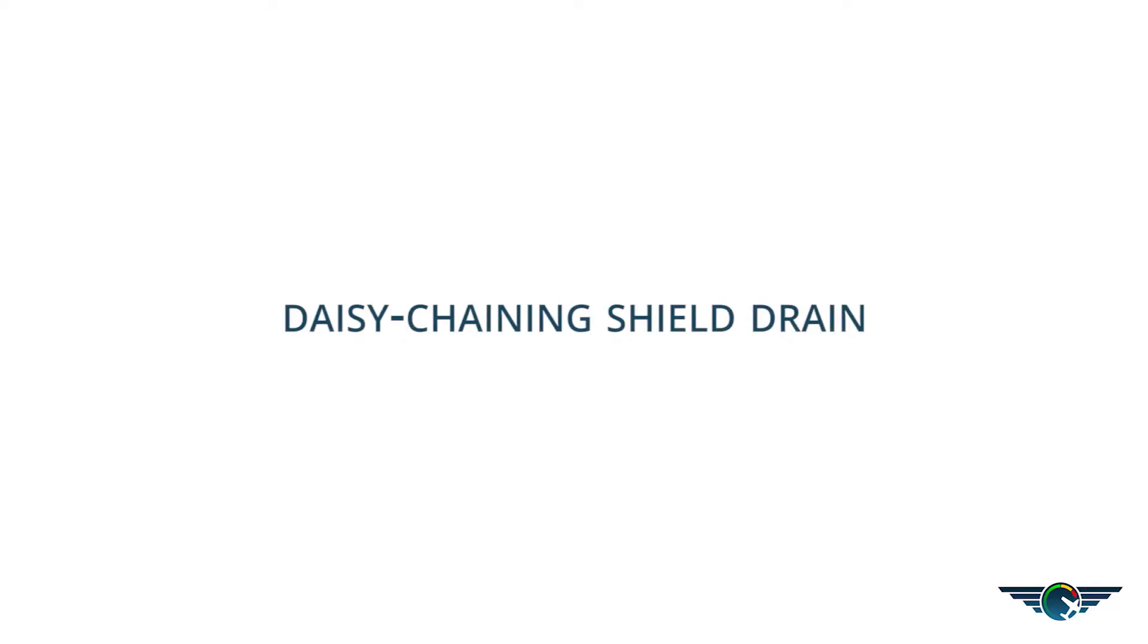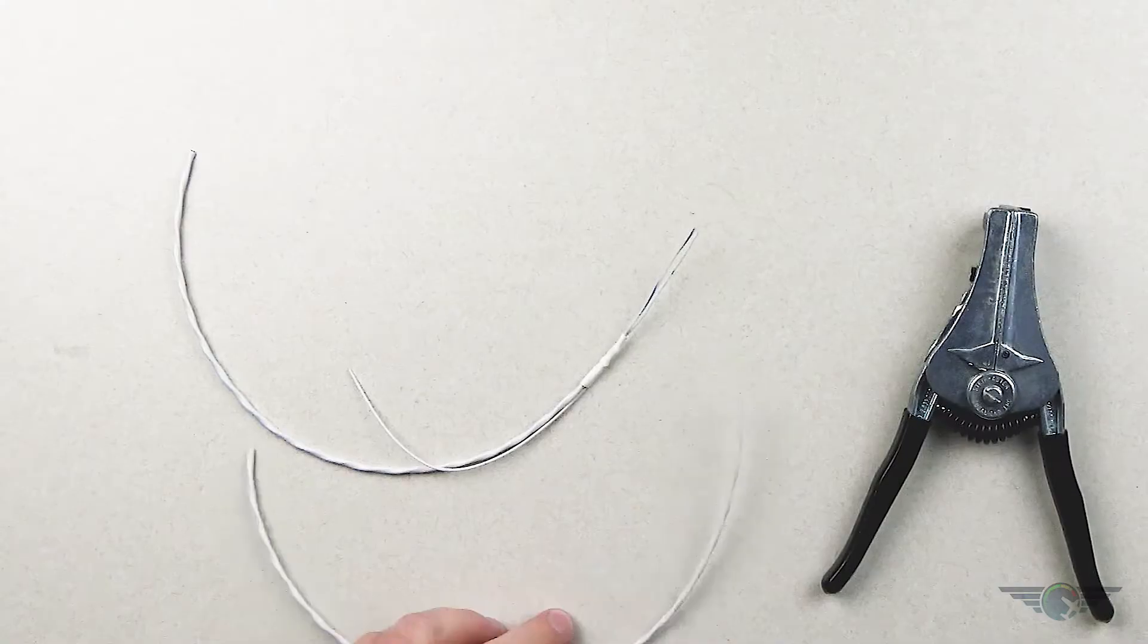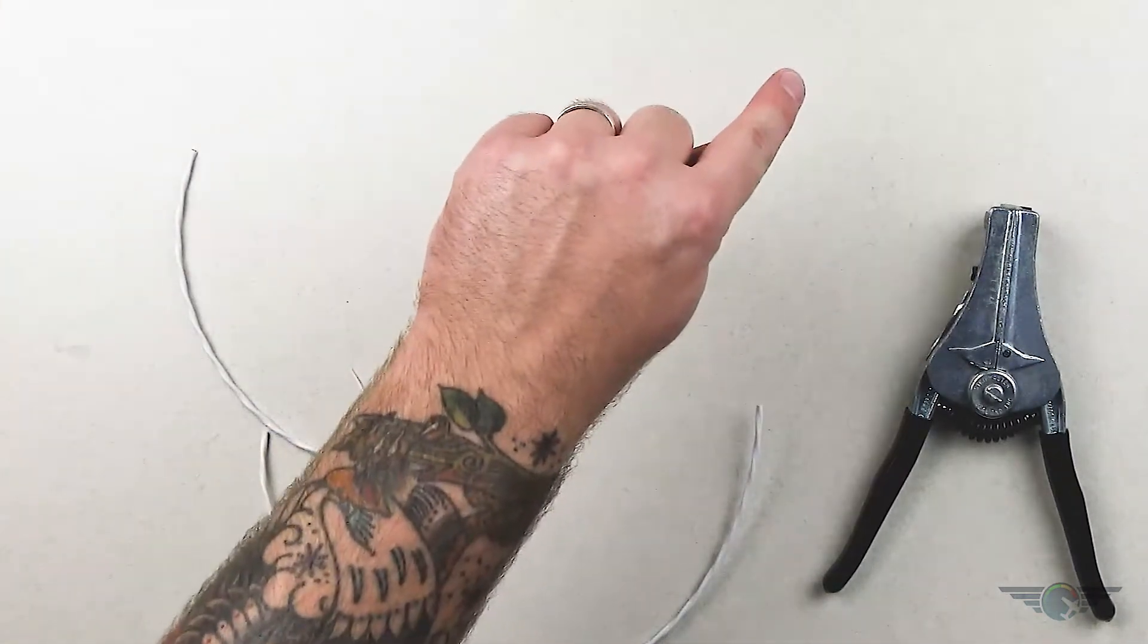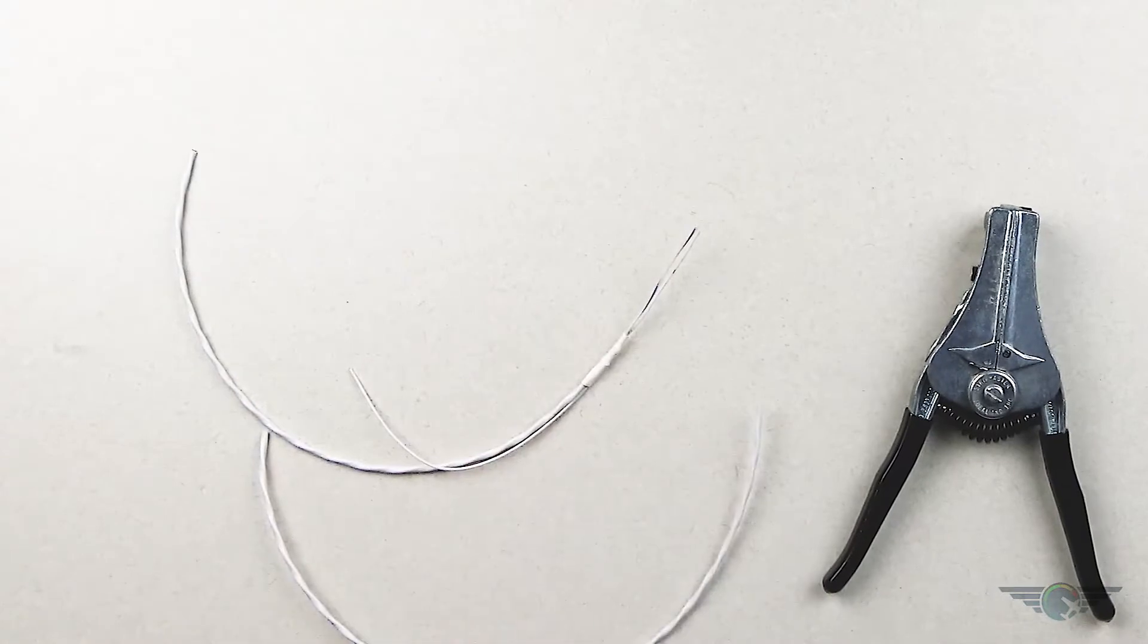Okay, so now I'm going to show you guys how to daisy chain the shield together. So we have another wire, right? So if this is our first LEGO CAN bus, it goes to an LRU and then comes back, and this will be our second LEGO CAN bus.